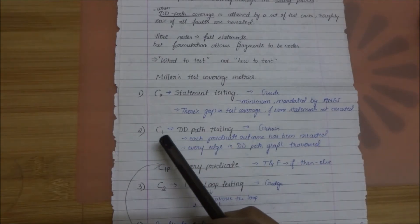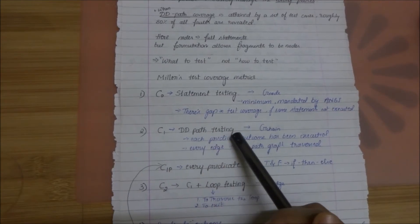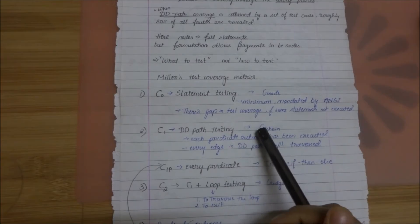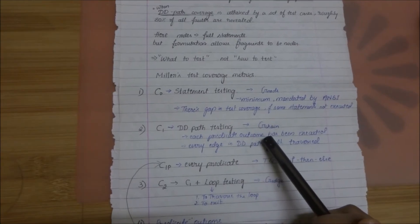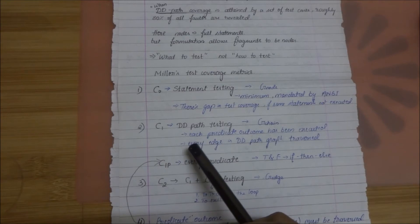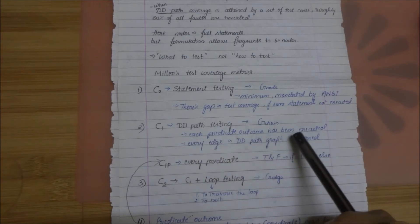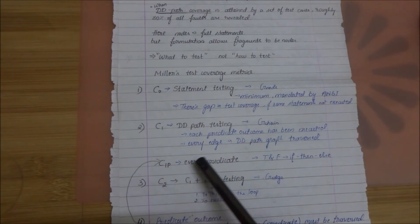The next one is C1. It represents DD path testing. You can compare this with the G-chain of the previous approach. Here it checks if each predicate outcome has been executed. Every edge in the DD path is traversed here.